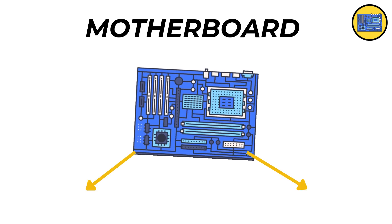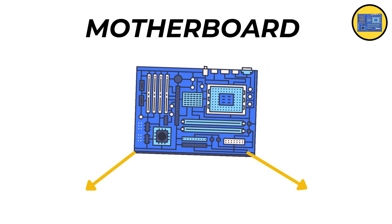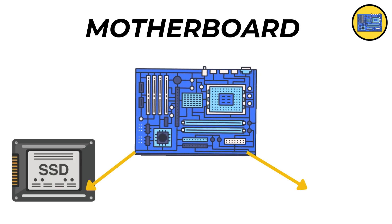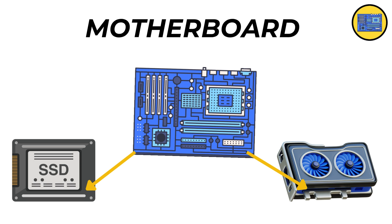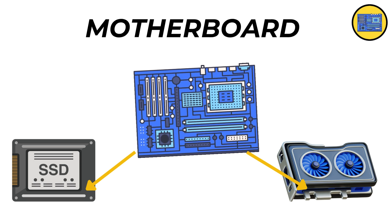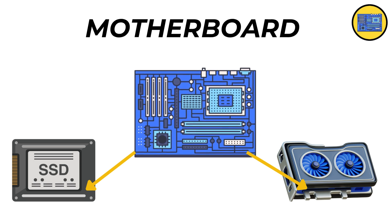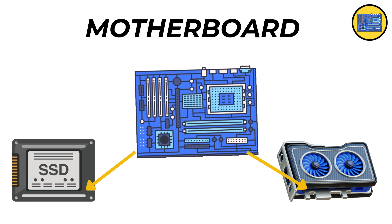The motherboard is like the computer's skeleton and nervous system all rolled into one big board. It connects all the important parts — the CPU, memory, storage, and others — so they can talk to each other and work together as a team.